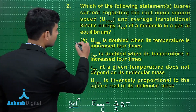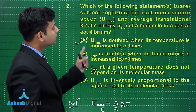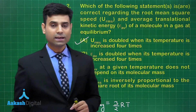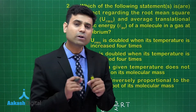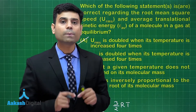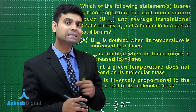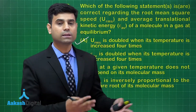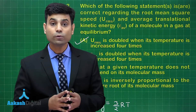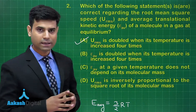Option B says E_avg is doubled when its temperature is increased four times. Average kinetic energy is directly proportional to temperature. So if we increase the temperature four times, the kinetic energy will also increase four times — not just double. So this is a wrong statement.